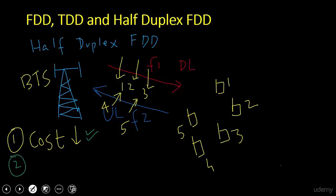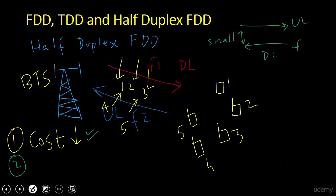Half Duplex FDD is also well-suited for scenarios where the separation between uplink and downlink spectrum is very small. When the duplex separation between uplink and downlink RF carriers is small, duplexer designs become much more challenging and expensive, so it is better to go for Half Duplex FDD when the two operating bands are relatively close to each other.